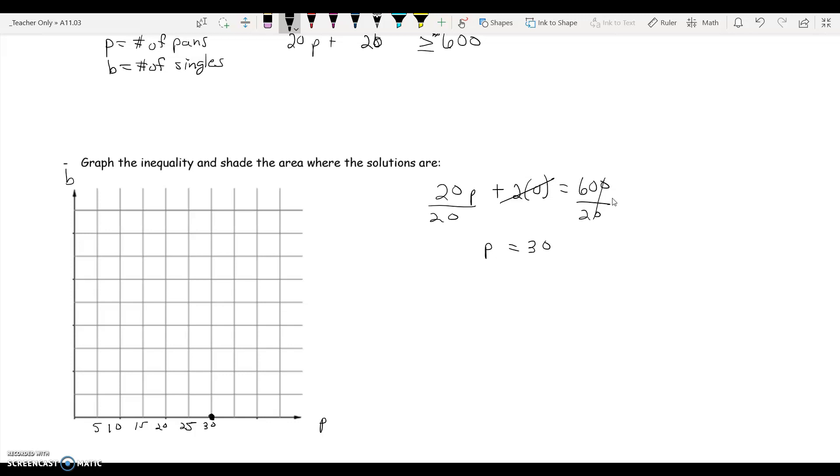So then to find my B intercept, I'll plug in 0 for P and solve for B. So again, 20 times 0, that's just going to be 0. So I need to divide by 2 here. So B actually equals 300. That's a much larger number, so let's count this one by 50s. I'm going to skip every other one. I'm going to say this is 100, 200. And then we see that our B intercept represents our number of single brownies. So if we didn't sell any pans, we would have to sell 300 single brownies. If we didn't sell any singles, we would need to sell 30 pans of brownies. That's how that works.